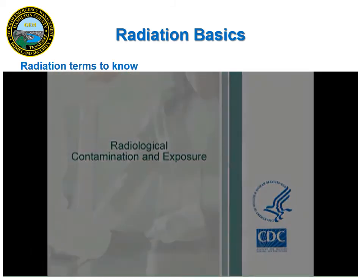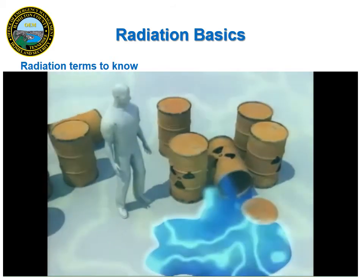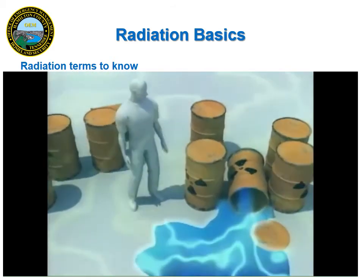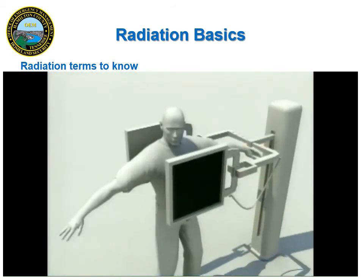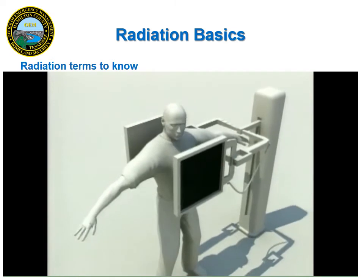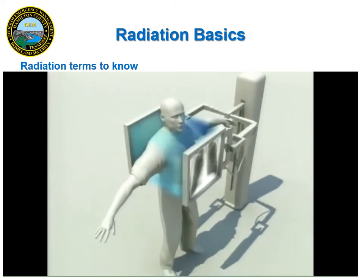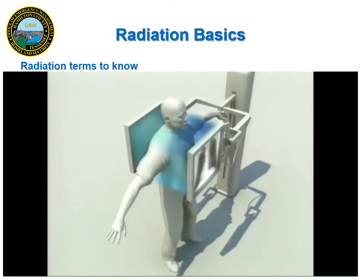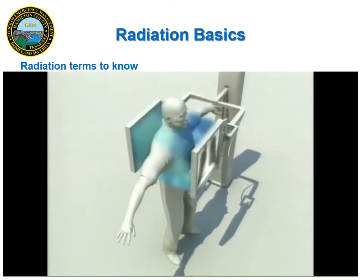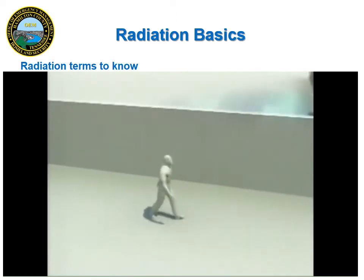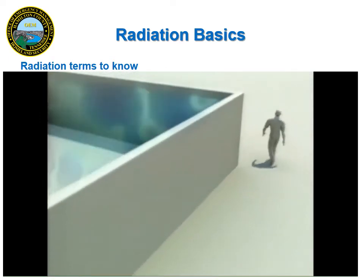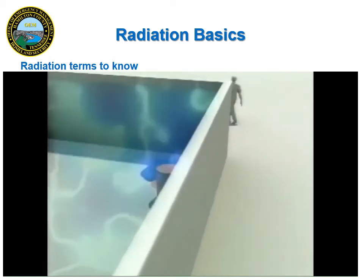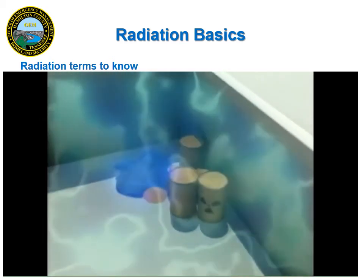Here is a video describing some of the radiological terms that you will need to know. When we are near a source of radiation, such as radioactive material, we can be exposed to the radiation emitted without becoming contaminated by the source. One way to think about exposure is to consider x-rays — when you have a chest x-ray, you are exposed to radiation but you don't become contaminated with radioactive material. We can reduce our exposure to radiation if we are shielded in some way, for example by standing behind a concrete wall or keeping the radioactive source inside a lead container.